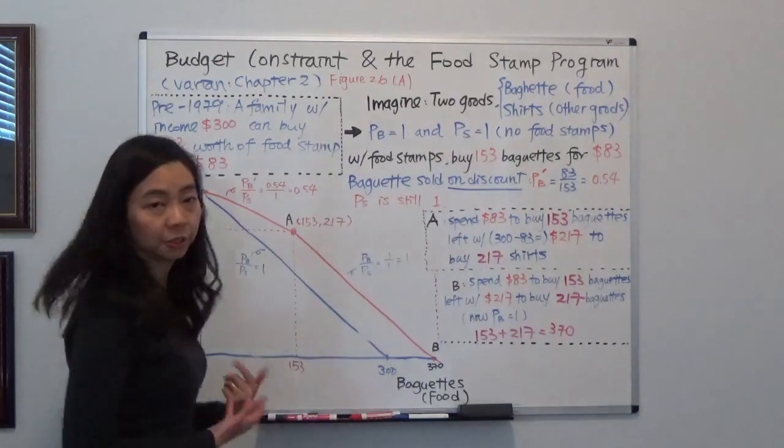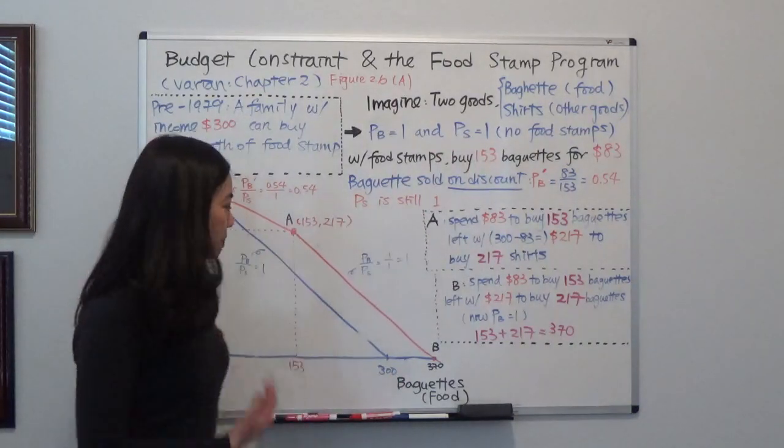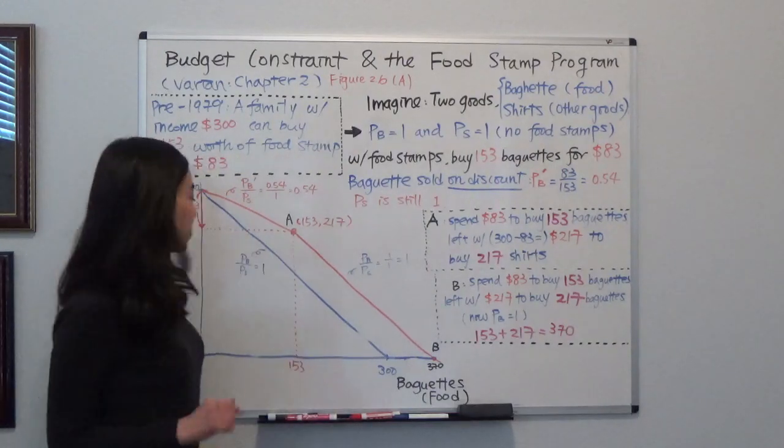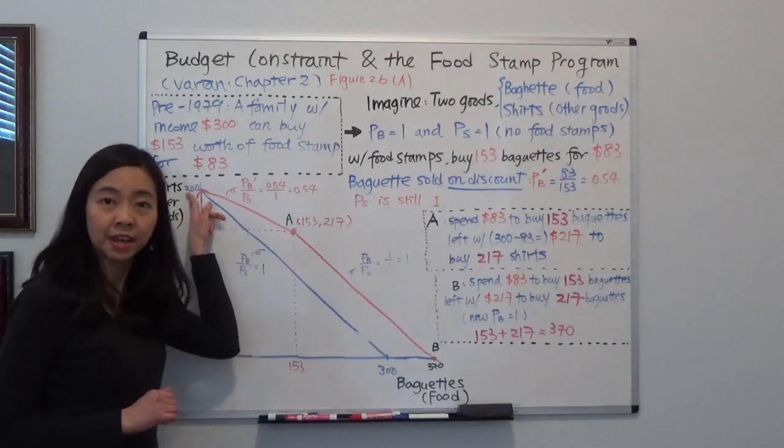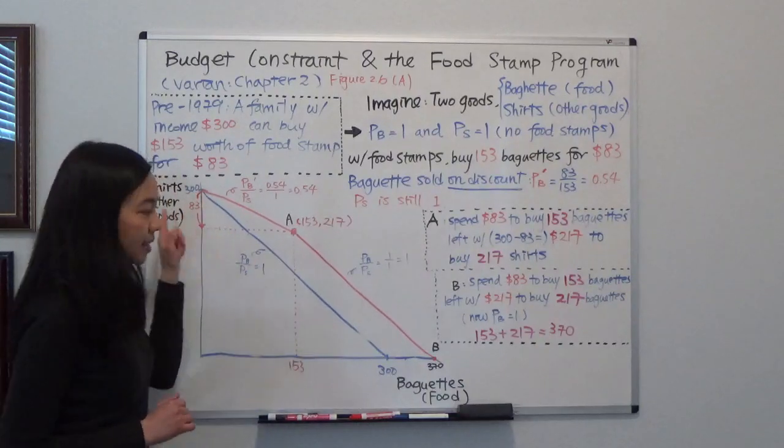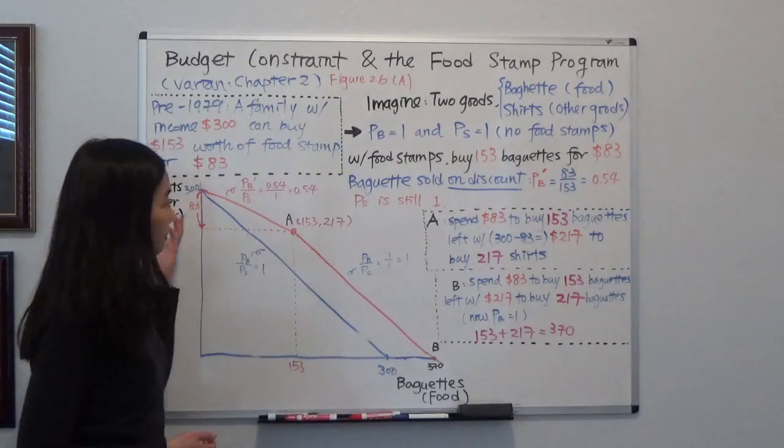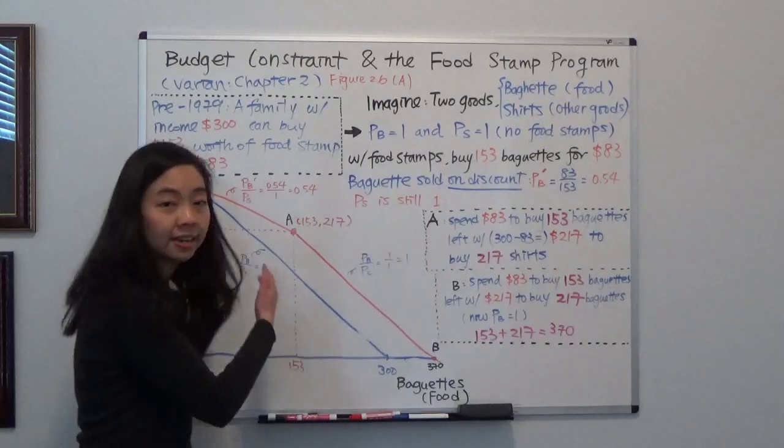Then with that budget of $300, you can either buy 300 baguettes and no t-shirts or you can buy 300 t-shirts and no baguettes or any combination in between.